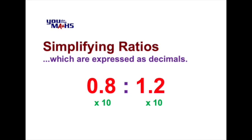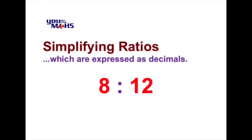By multiplying by 10 the decimal point will move one place to the right and 0.8 will become 8 and 1.2 will become 12. Now we can simplify this ratio either by expressing it as a fraction or we can see that a number that goes into both 8 and 12 is 4.